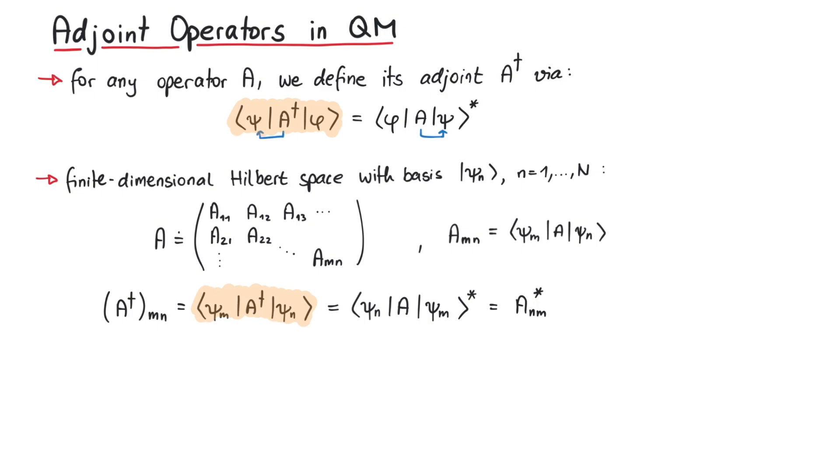Therefore, the m,n matrix element of A dagger is the same as the complex conjugated n,m matrix element of A. We see that in matrix notation, Hermitian conjugation corresponds to transposed and complex conjugated matrices.